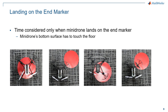Here are a few examples of correct and incorrect landing on the circular marker. The first one is correct because the entire Minidrone has landed correctly on the circular mark, whereas the second one is not correct because the entire body of the Minidrone is outside except the bumper, and hence the bottom of the Minidrone does not touch the circle.